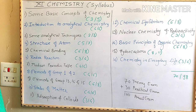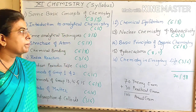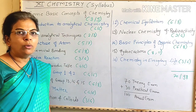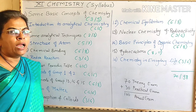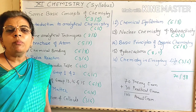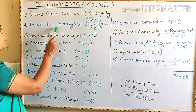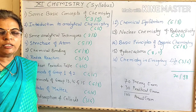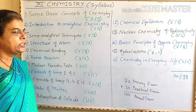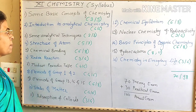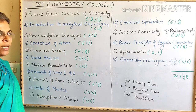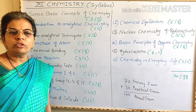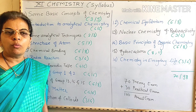The first topic is Some Basic Concepts of Chemistry. Weightage for this topic is 3 or 5 — that is 3 marks compulsory and 5 marks with option. The second topic is Introduction to Analytical Chemistry. Weightage is 4 or 6 — that is 4 marks compulsory or 6 marks with option. The third is Some Analytical Techniques. Weightage is 2 or 3 — 2 mark questions are compulsory or 3 marks with options.